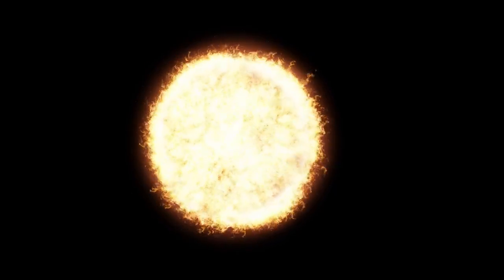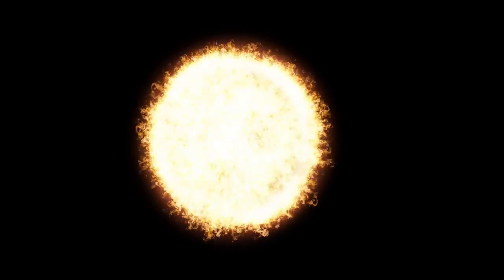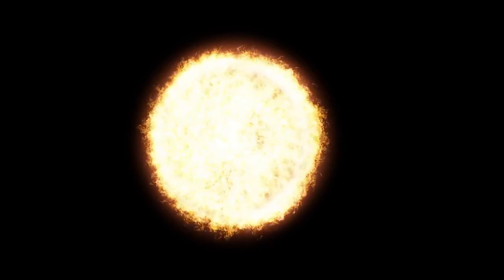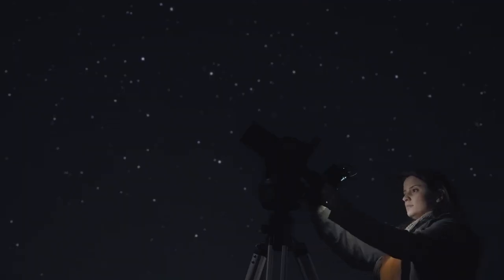We might see more erratic dimming and brightening as the star destabilizes, followed by a blinding burst of light. A Betelgeuse supernova would dominate the night sky, potentially for weeks or even months, possibly outshining the moon. But it's not just about the light show.